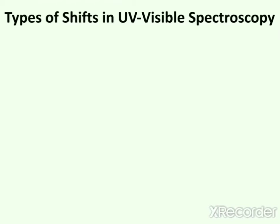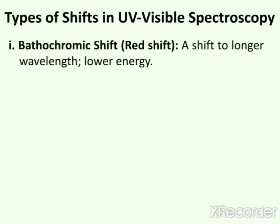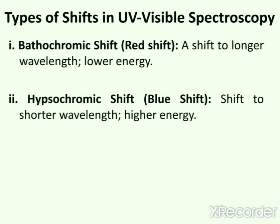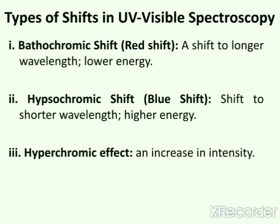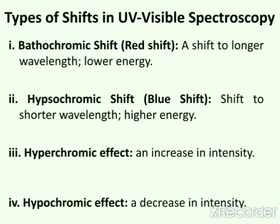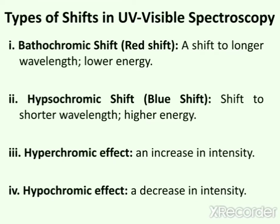Now next is types of shifts in ultraviolet visible spectroscopy. There are four types of shifts: first is bathochromic shift, second is hypsochromic shift, third is hyperchromic effect, and fourth is hypochromic effect.